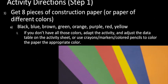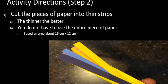For the activity, first get eight different colored pieces of paper — construction paper, cardstock, or whatever you have. If you don't have eight colors, color them with markers, crayons, or colored pencils. The colors should preferably be black, blue, brown, green, orange, red, purple, and yellow. Then cut those larger pieces into thin strips — the thinner the better but not too thin. I used an area approximately 16 centimeters by 12 centimeters for each color.